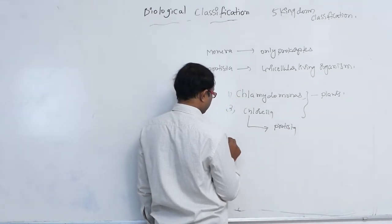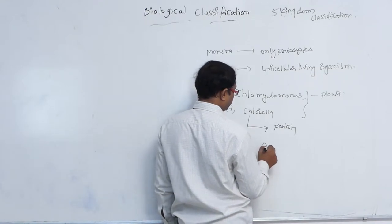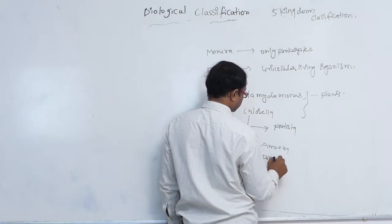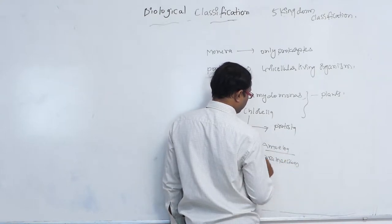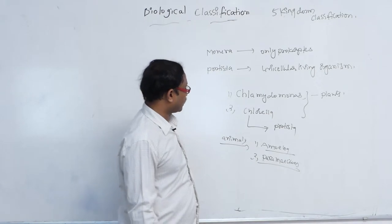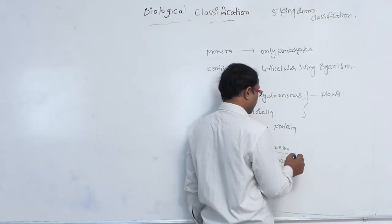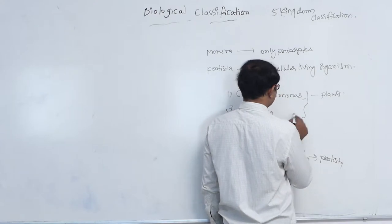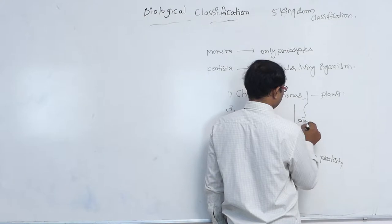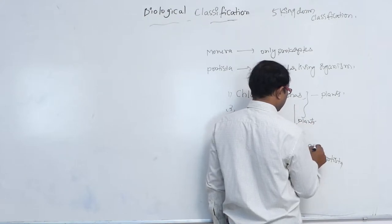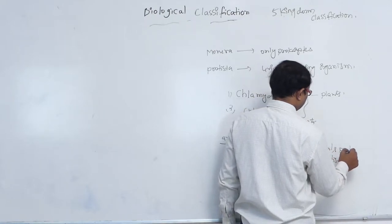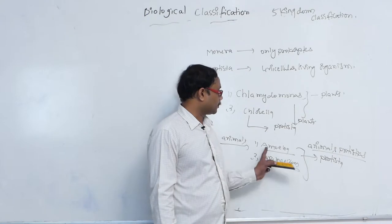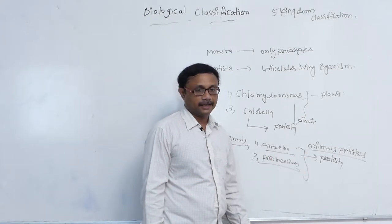Similarly, in animals, amoeba and paramecium — generally before R.H. Whittaker, they belonged to Animalia. Now amoeba and paramecium belong to Protista. Plant protista are chlamydomonas and chlorella, and animal protista are amoeba and paramecium.